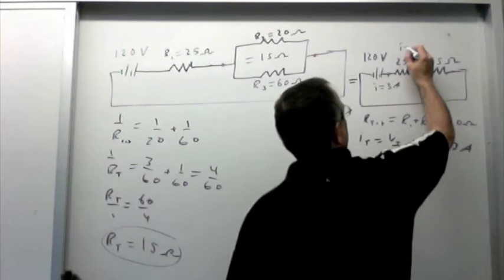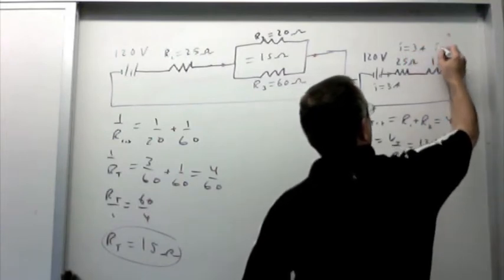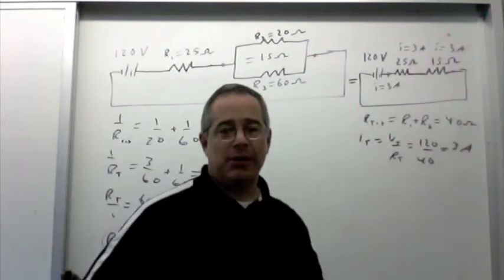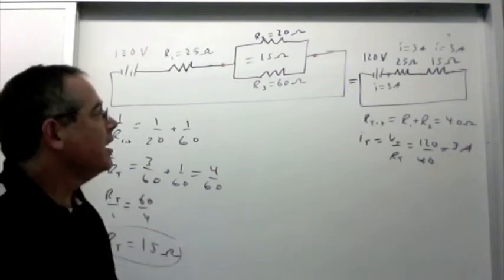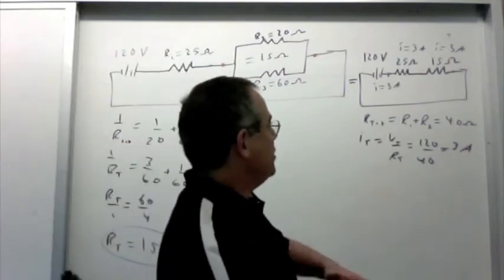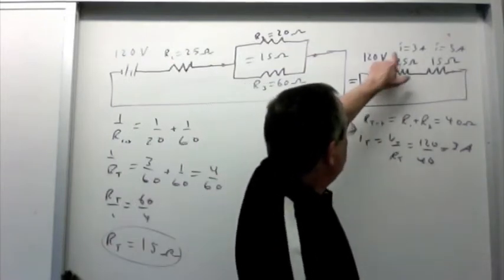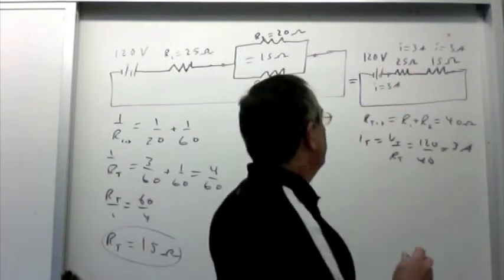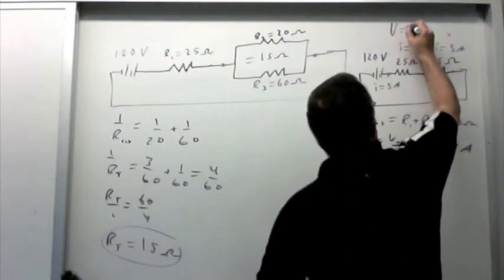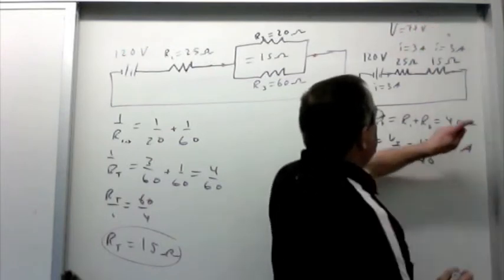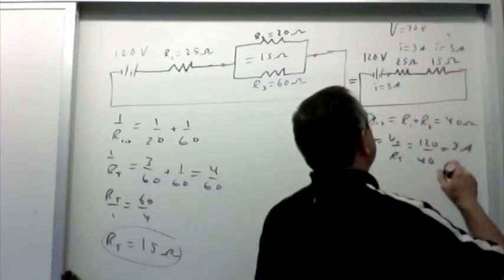We have 3 amps through the 25 ohm and 3 amps through the 15 ohm resistor. And now we can use Ohm's law simply to find the voltage for each of those resistors. So for this one, V equals IR, we get 75 volts. This one, V equals IR, 3 times 15 is 45 volts.